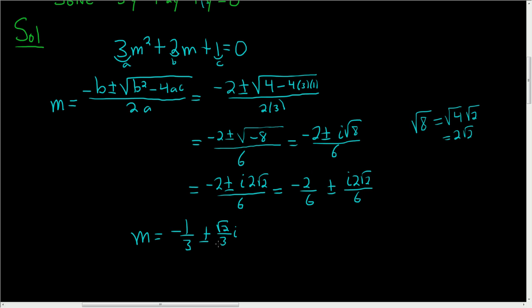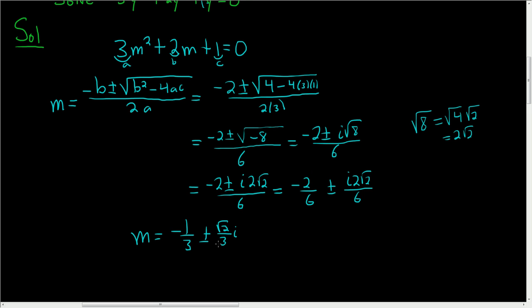So we have complex conjugate roots for our characteristic equation. They are of the form alpha plus or minus beta i. In this case, alpha is negative 1 third, and beta is the square root of 2 over 3.